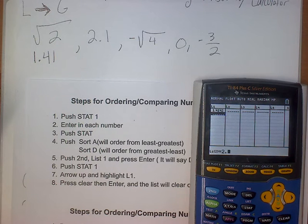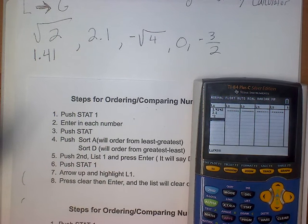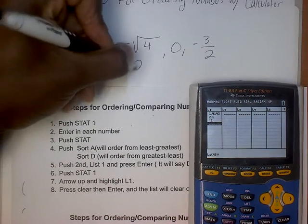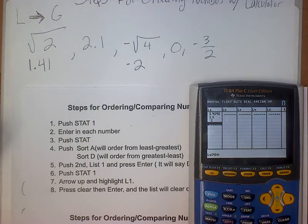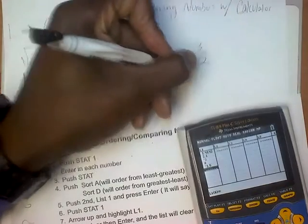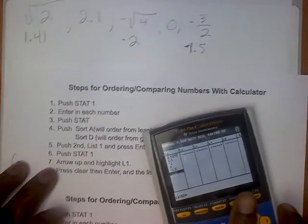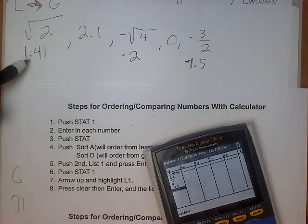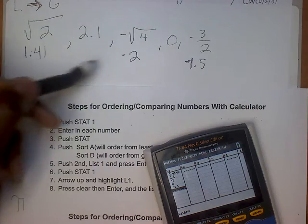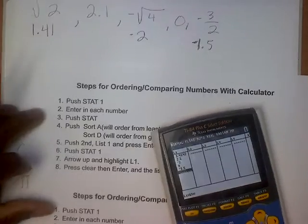Next number is 2.1 — that's a decimal, pretty easy. Put it in and press enter. Next is negative square root of 4 — put that in, press enter, and it turns into negative 2. Next, enter zero, and then negative 3 over 2, which gives negative 1.5. You're just turning numbers you don't know the value of into decimals. Remember: in your answer choices they won't be in decimal form — they'll be in the original form from your question.